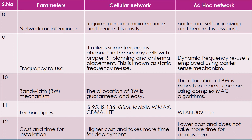Technology-wise: cellular networks use technologies from 2G/3G up to the present LTE. Ad hoc networks use WLAN 802.11 standards. Cost and time for installation: cellular network has high cost and takes more time for deployment, while ad hoc network has low cost and does not take more time for deployment.